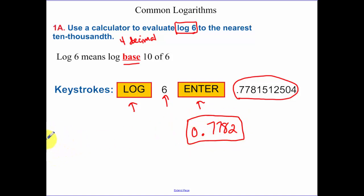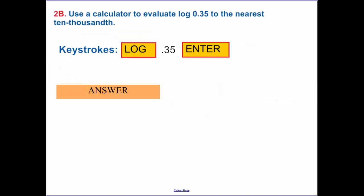Just typing in your calculator. Literally, can't do it without a calculator, make sure you have your calculator. Use a calculator to find log base 10 to the nearest ten-thousandth. Again, keystrokes: log 0.35, enter, and your answer is negative 0.4559.